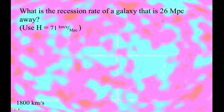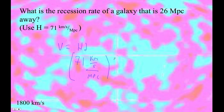What is the recession rate of a galaxy that's 26 megaparsecs away? Well, V equals H₀D, right? So it's 71 kilometers per second per megaparsec times 26 megaparsecs.